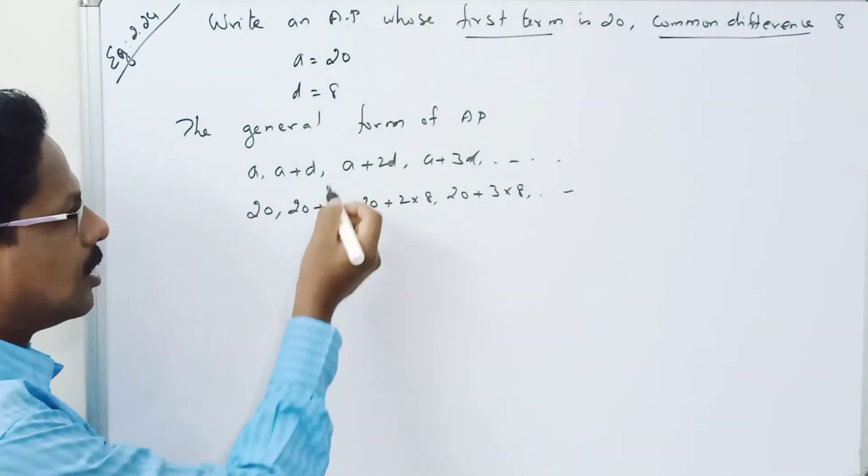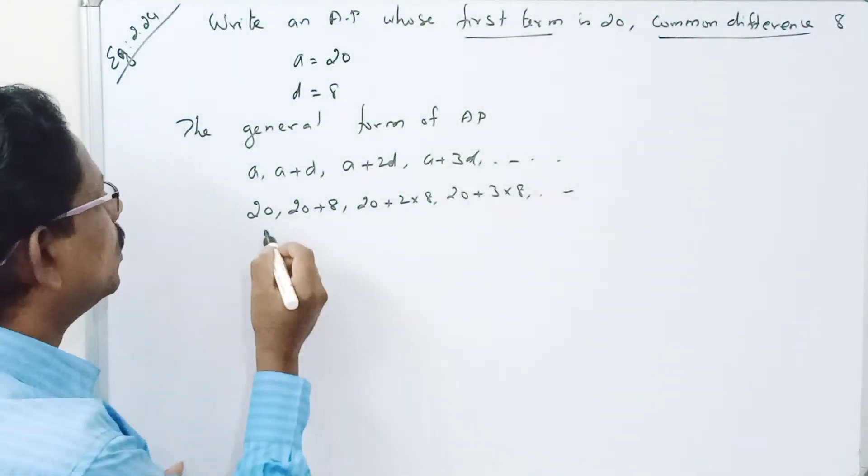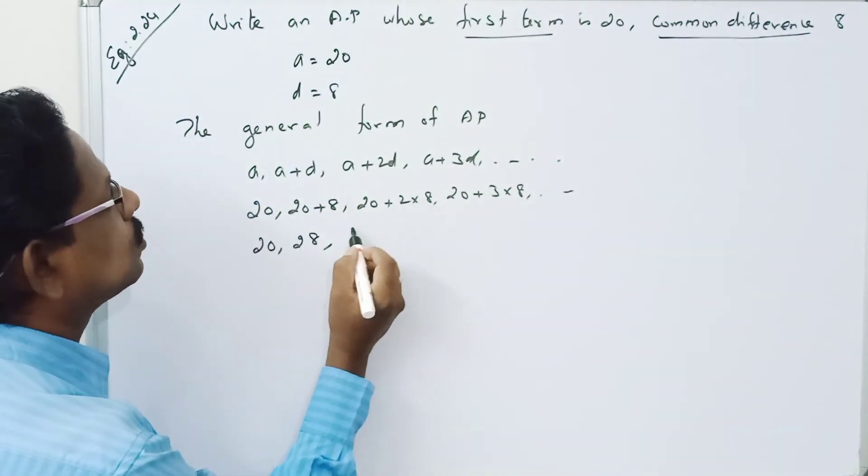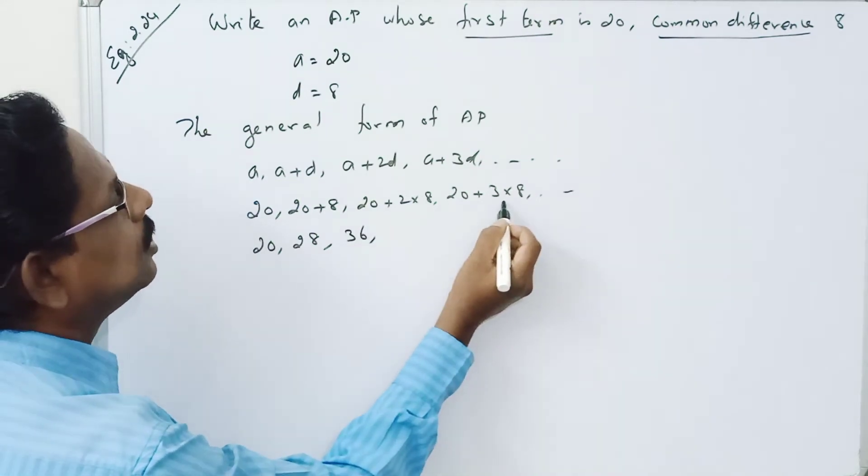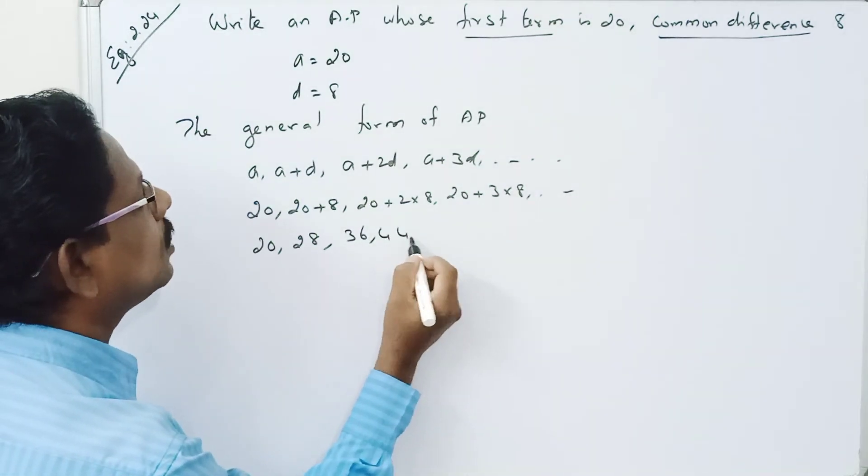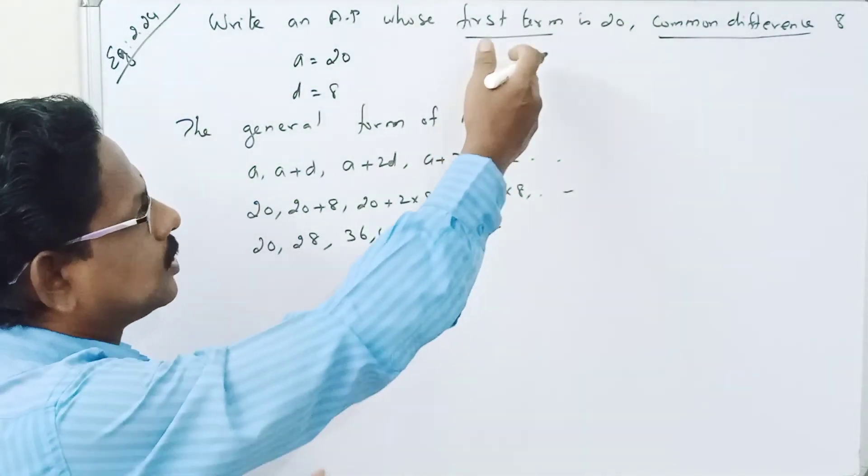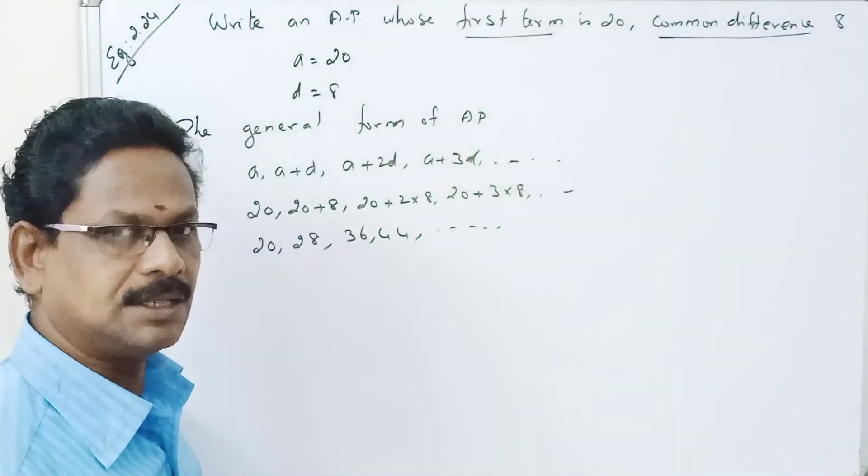So: 20, 28, 20 plus 16 is 36, 20 plus 24 is 44, etc. This is the AP. First term is 20, common difference is 8.